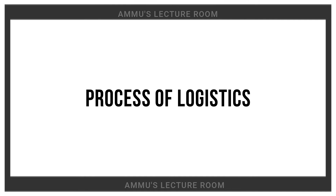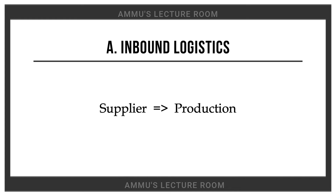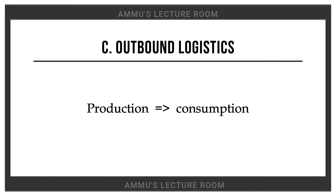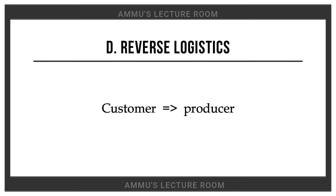Process of logistics: First, inbound logistics — dealing with raw materials and components from suppliers to production. Second, process logistics — dealing with raw materials management, movement, and finished goods in production. Third, outbound logistics — dealing with goods from production to consumption. Fourth, reverse logistics — dealing with reverse flow such as damaged or defective goods and customer returns.